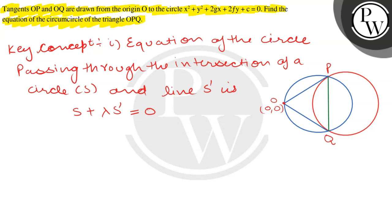The given condition is: tangents OP and OQ are drawn from the origin O to the circle x² + y² + 2gx + 2fy + c = 0.